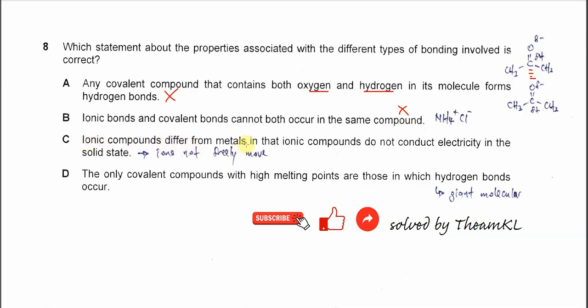Ionic compounds differ from metals in that ionic compounds do not conduct electricity in the solid state. This is true because the ions are not freely moved, they cannot carry the charge. So C is the answer.